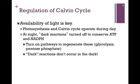How is the Calvin cycle regulated? The primary factor is the availability of light. Photosynthesis and the Calvin cycle operate during the daytime. We need enough energy in the form of ATP and NADPH, generated through the light reactions, in order to carry on the reactions of the Calvin cycle. At night, we turn off the Calvin cycle — the so-called dark reactions — in order to conserve ATP and NADPH. Instead, we turn on pathways that will regenerate these: glycolysis to generate more ATP, and the pentose phosphate pathway to generate more NADPH.